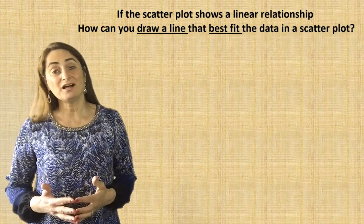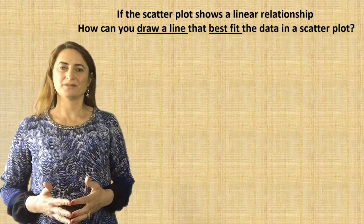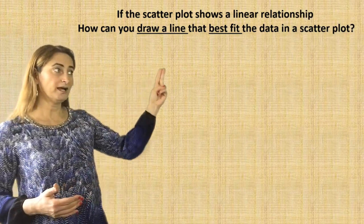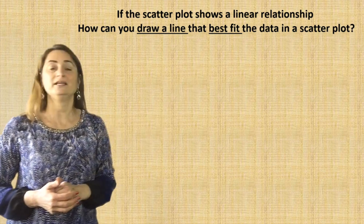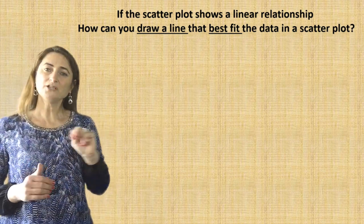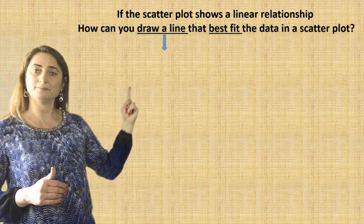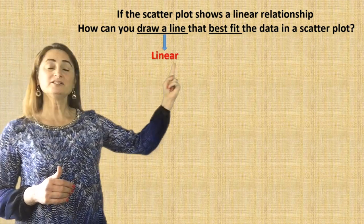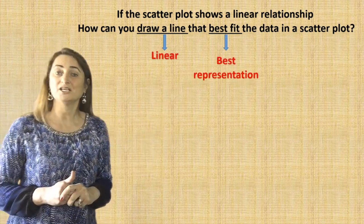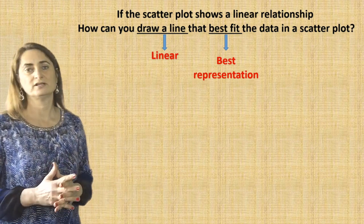Now, if the scatterplot shows a linear relationship, how can you draw a line that best fits the data in the scatterplot? Watch the two clues. Draw a line — that means it's linear. Best fit — that means it's the best representation of all the dots on the graph.